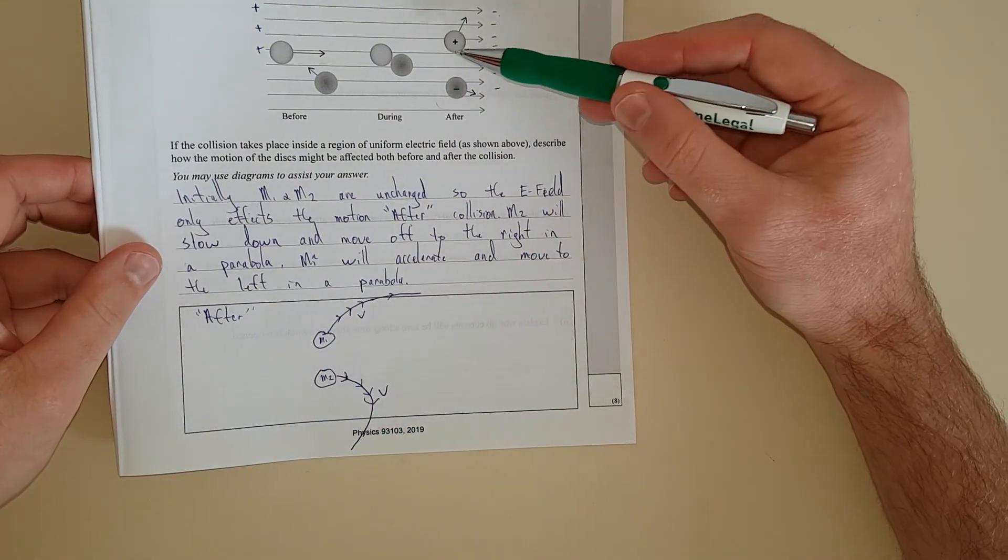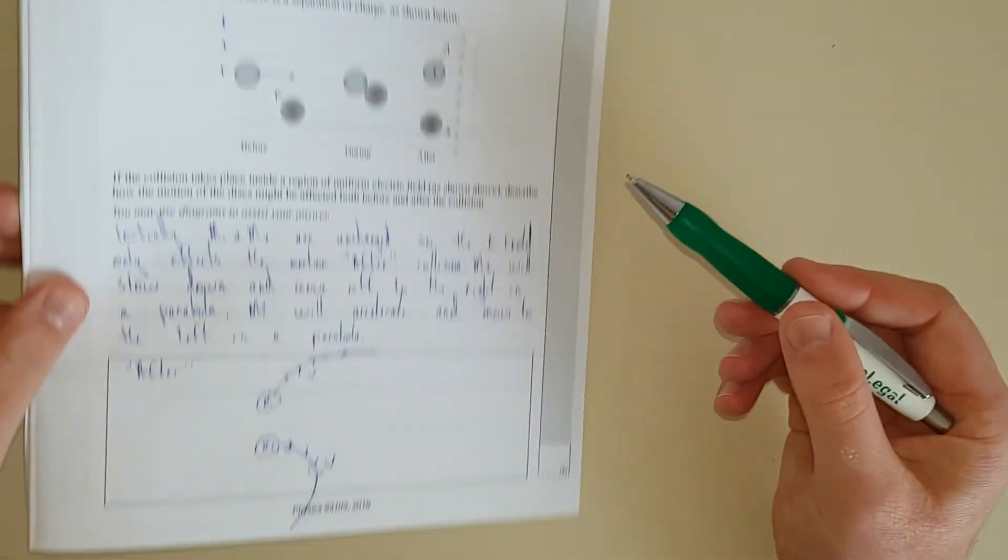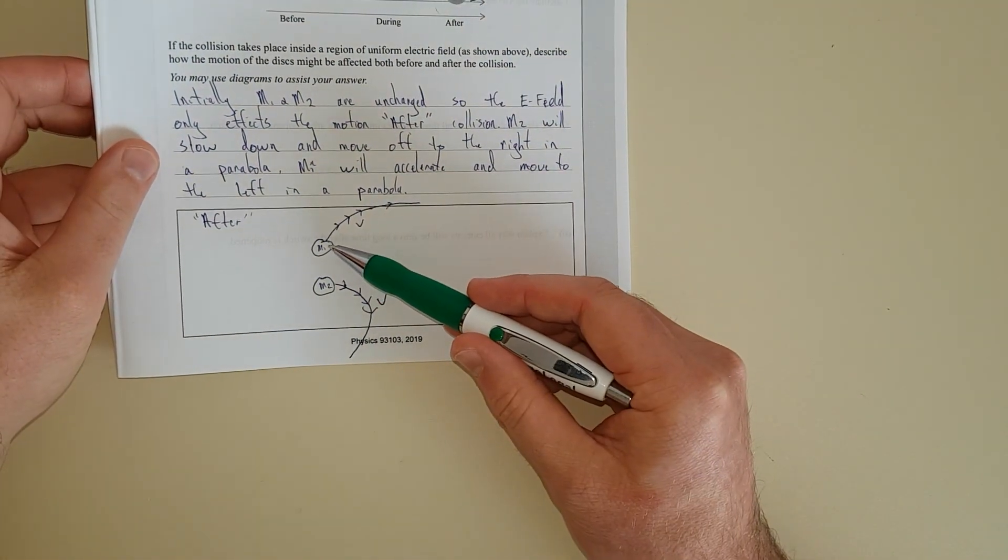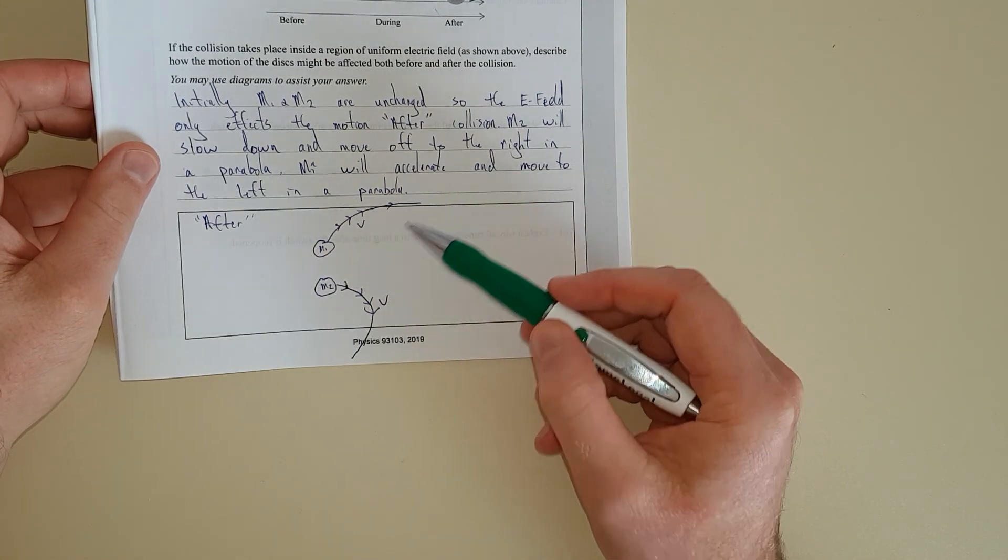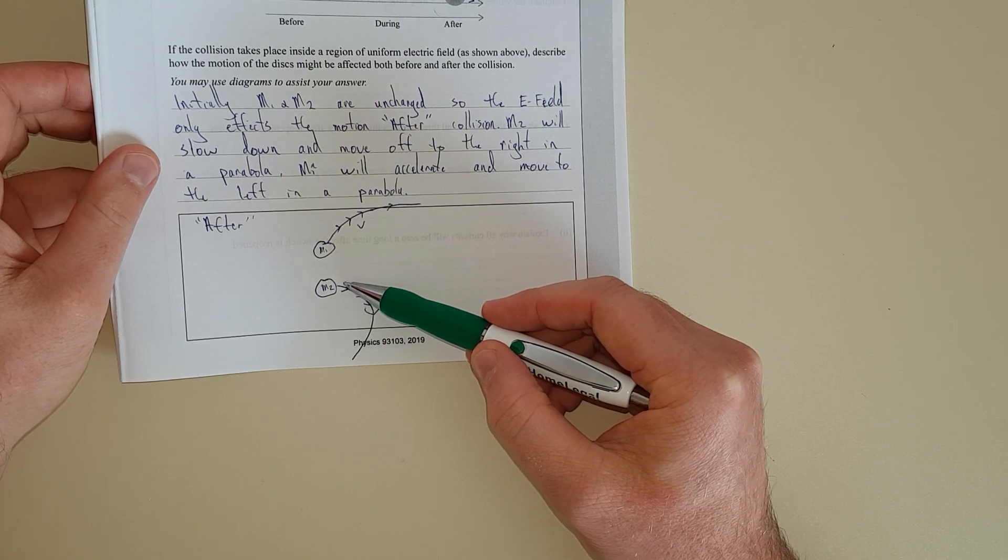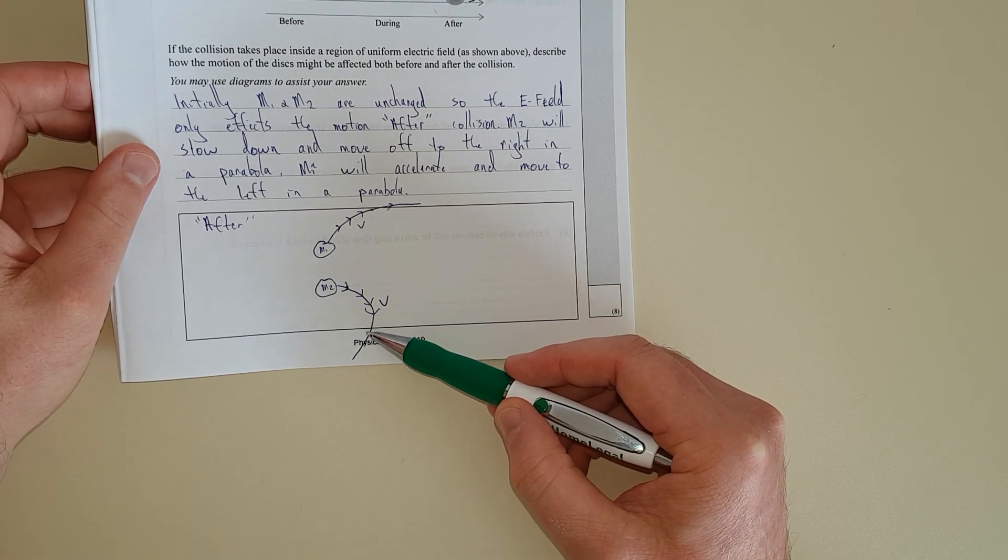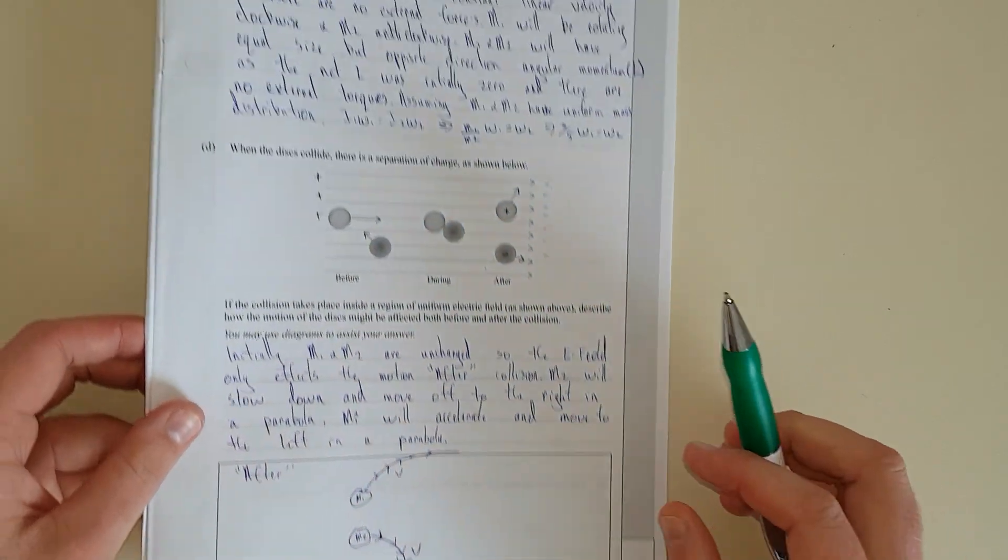M1 will decelerate and move to the left in a parabola. This one is going to shoot off, it's almost as if it was falling under gravity. M2 would actually, it would almost be as if you were throwing a ball up: it would slow down, reach the peak, and then start accelerating back the other way.